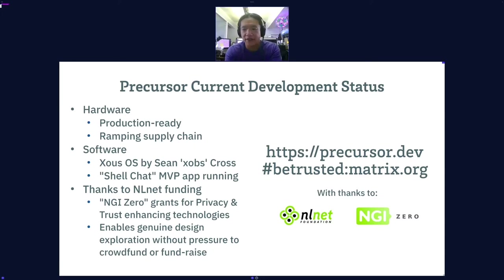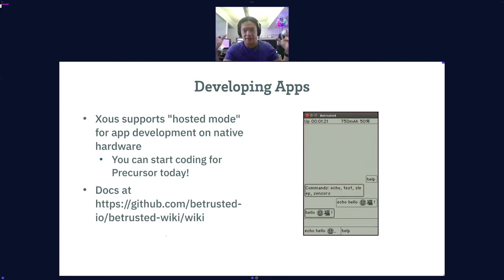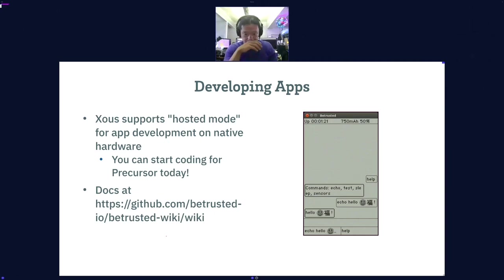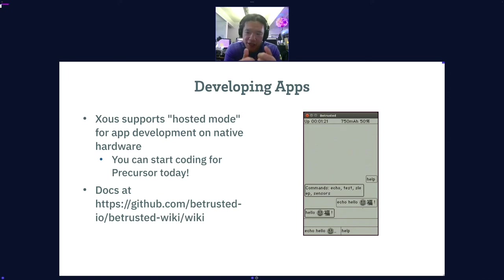You can go to precursor.dev to learn more — that's our crowdfunding site. We also have a GitHub repo. Our full custom OS written by Sean Cross is coming together. We now have a minimum viable product shell chat app running on it, showing emoji and Hangul already live inside the OS. Sean was very insistent on making the operating system multi-platform — it can run on your desktop in a simulation environment. It doesn't have all the security properties but has all the API calls so you can start coding for Precursor today, even without the hardware. Visit our wiki at betrusted.io on GitHub to see instructions for running the app.